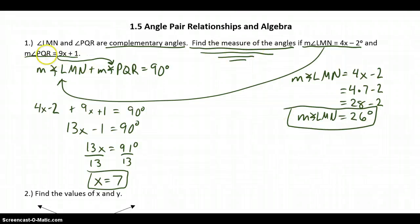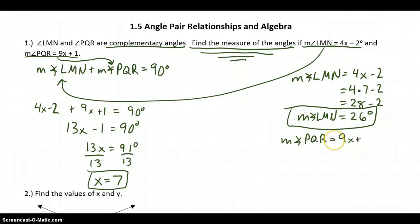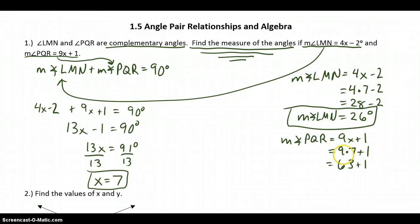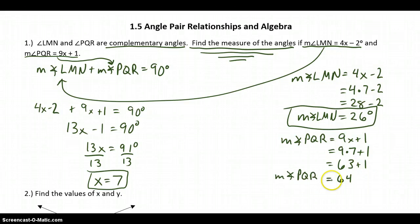Now I need to find the measure of angle PQR. The measure of angle PQR is 9x plus 1. So I substitute 7 in for x: 9 times 7 plus 1. Well, 9 times 7 is 63, and adding 1 gives a grand total of 64. So the measure of angle PQR equals 64 degrees.